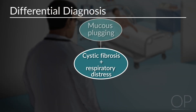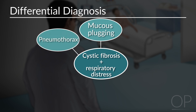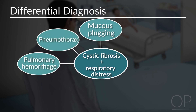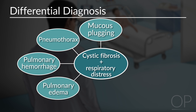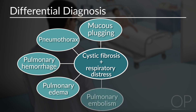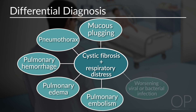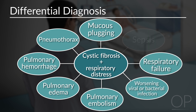The differential diagnosis includes mucus plugging, pneumothorax, pulmonary hemorrhage, pulmonary edema, pulmonary embolism, worsening viral or bacterial infection, respiratory failure, and sepsis.